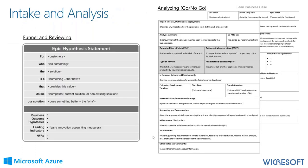The second step is intake analysis. The two critical artifacts here are the epic hypothesis statement, which we can use as early as the funnel stage. You can have an ideation page, but the epic hypothesis statement is critical to the reviewing stage. As we go into analyzing, we develop the lean business case.